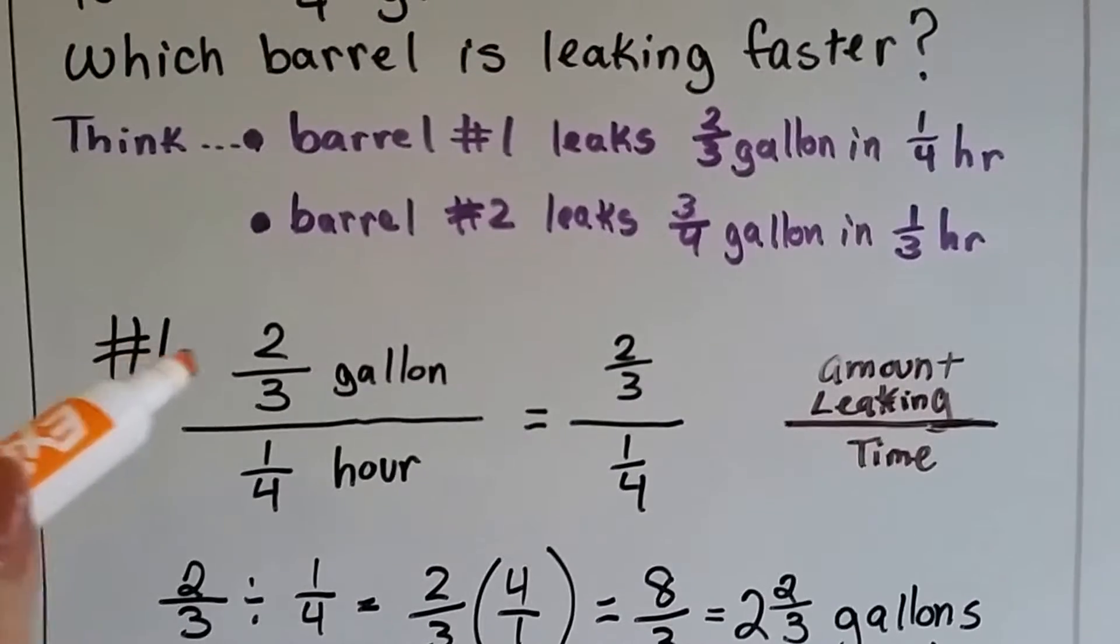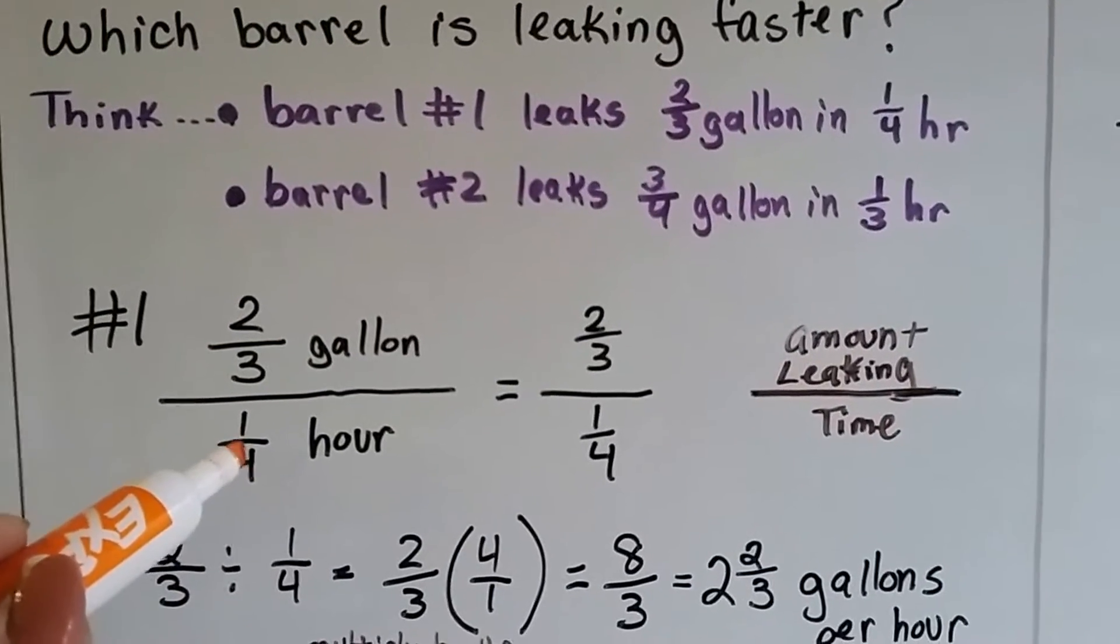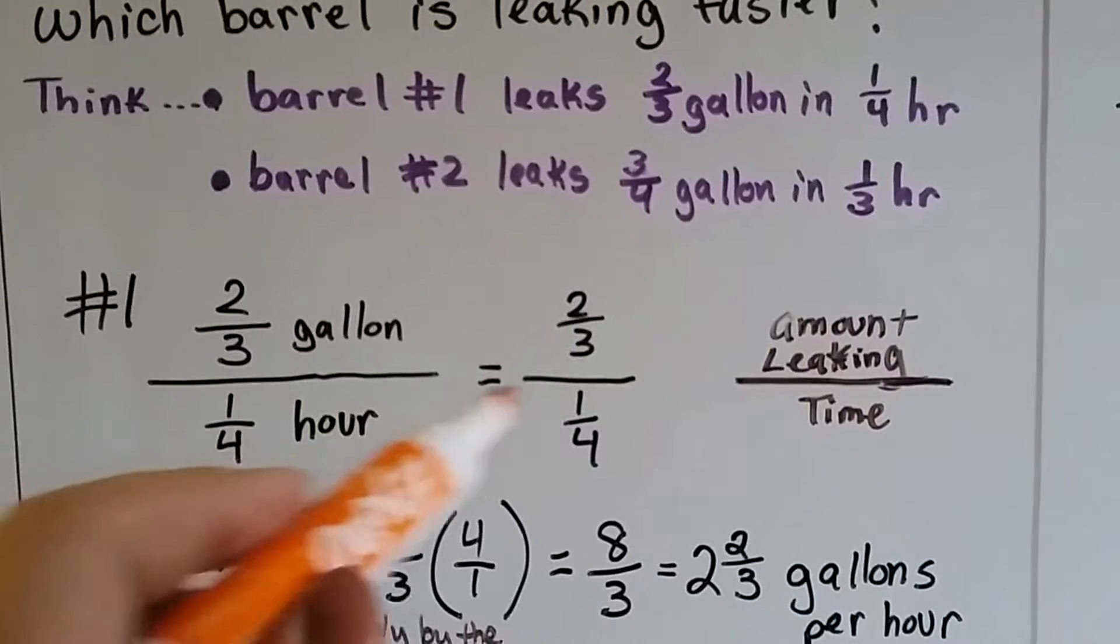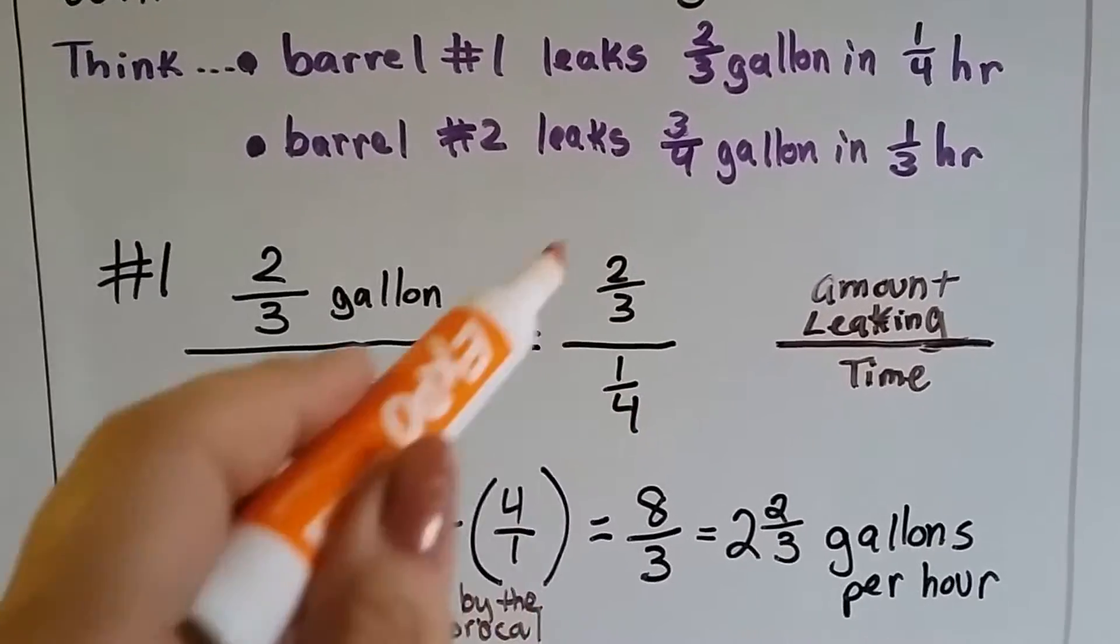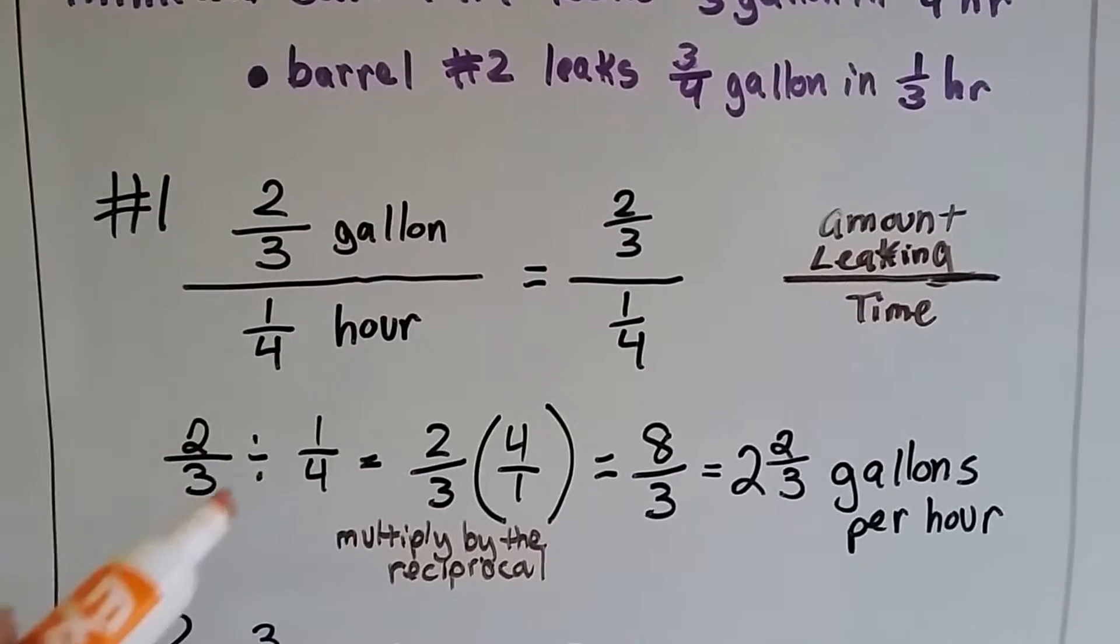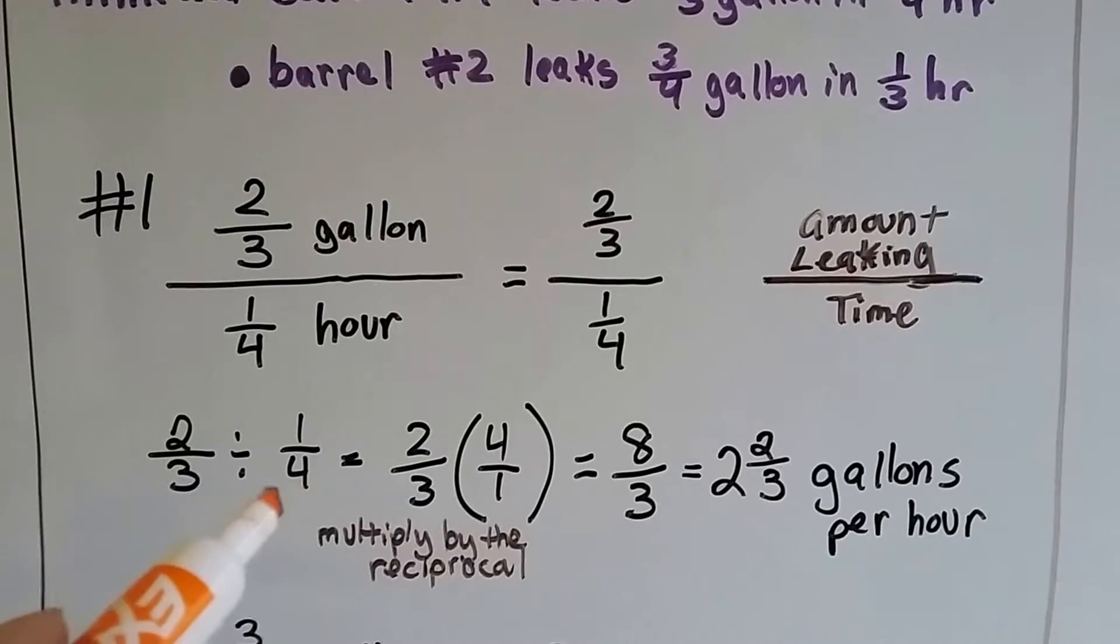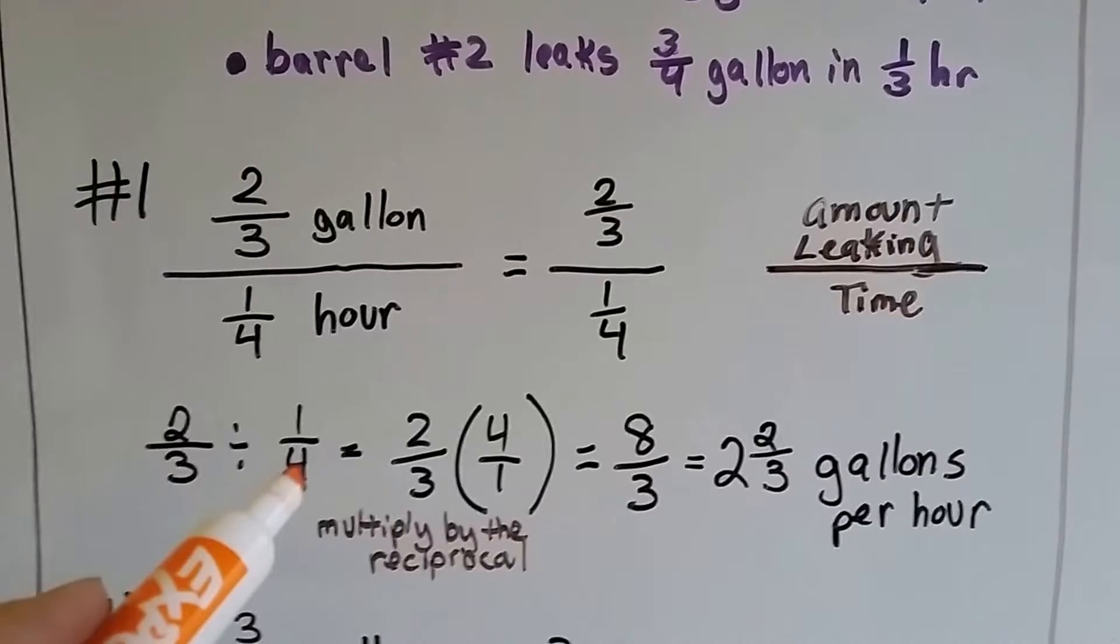So now, with barrel number one, we know it's two-thirds of a gallon leaking in one-fourth of an hour. And we know that all it means is the amount of leaking over time and that this is a division problem. So it means two-thirds divided by one-fourth. So we rewrite it, two-thirds divided by one-fourth, to divide it, we have to multiply it by its reciprocal of one-fourth.